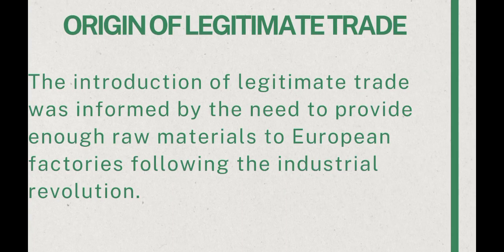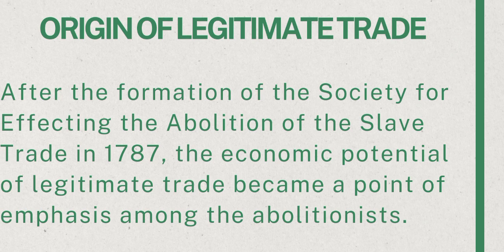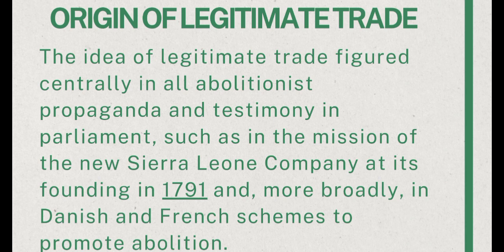Although there was a serious campaign for the abolition of slavery on moral grounds, the introduction of legitimate trade was informed by the need to provide enough raw materials to European factories following the Industrial Revolution. After the formation of the Society for Effecting the Abolition of the Slave Trade in 1787, the economic potential of legitimate trade became a point of emphasis among the abolitionists — those that advocated for the end of slave trade. The idea of legitimate trade figured centrally in all abolitionist propaganda and testimony in parliament, such as in the mission of the new Sierra Leone Company at its founding in 1791, and more broadly in Danish and French schemes to promote abolition.